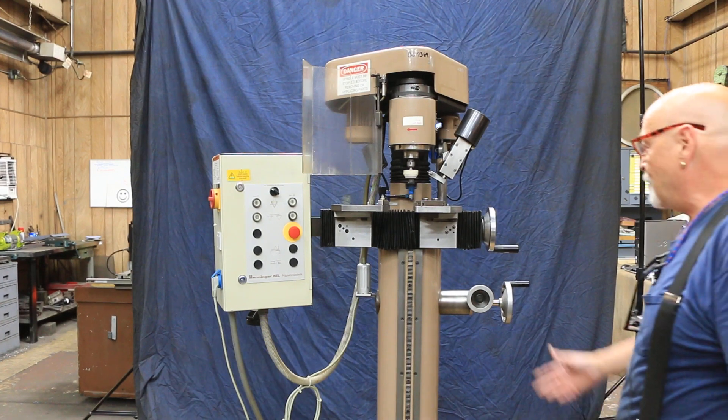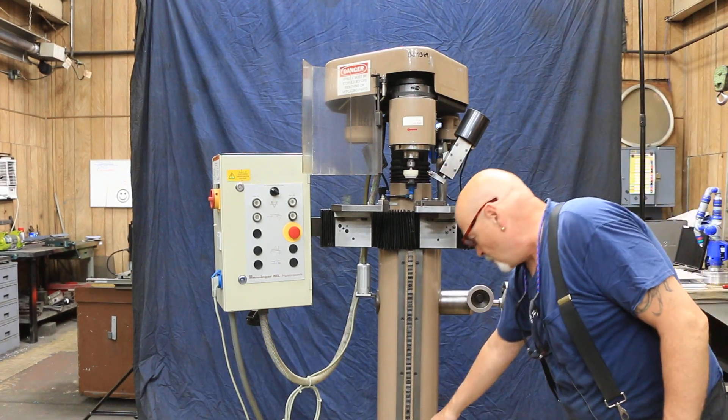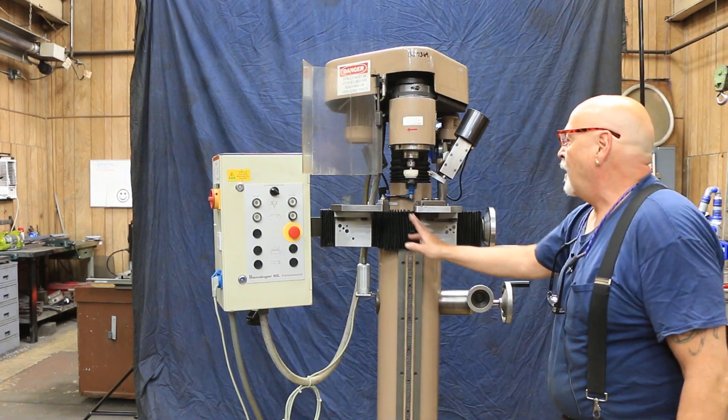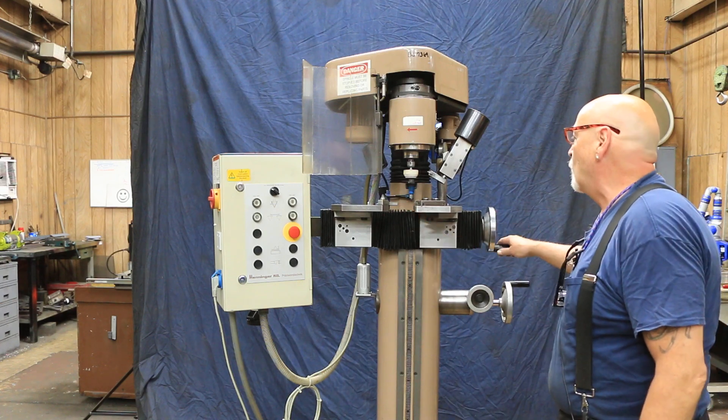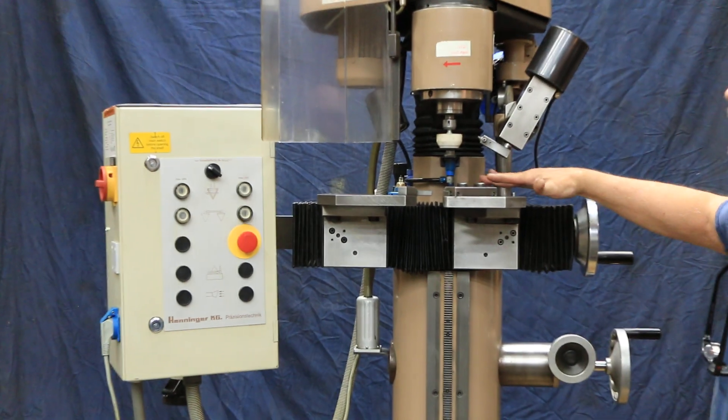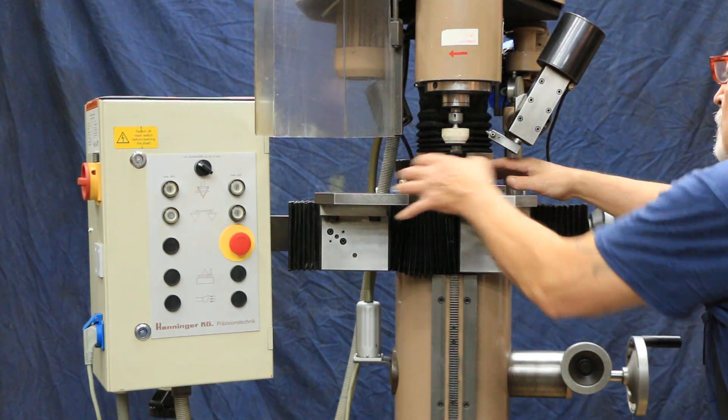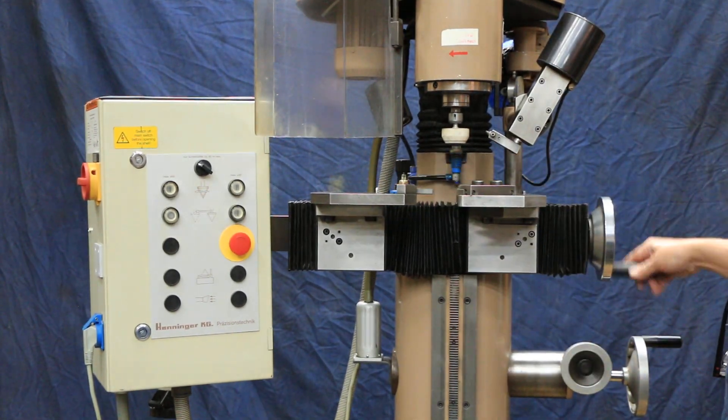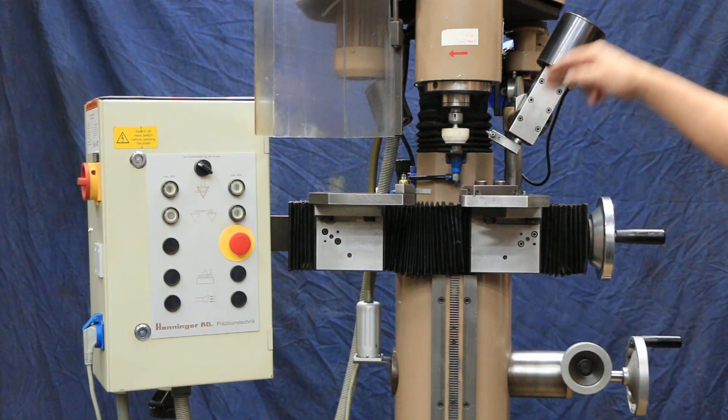So what we have here is a center down here and a clamping device here that can hold your part. You bring this in and it clamps it in the V here. You've got some fingers and there's some adjustability there for the different sizes of your parts.